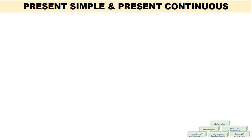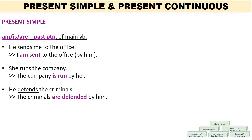Let's begin by looking at the present simple and the present continuous tenses, and see how we change these into the passive voice. If we were to write a sentence using the present simple in the passive voice, the formula would read as follows: am, or is, or are, plus the past participle of the main verb that we are using. Let's take a look at some example sentences.